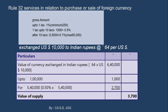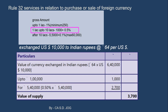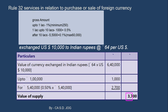Applying the slabs to Rs. 6,40,000: up to Rs. 1 lakh at 1% = Rs. 1,000 (minimum Rs. 250, so Rs. 1,000 applies). From Rs. 1 lakh to Rs. 10 lakh at 0.5% — for the remaining Rs. 5,40,000, 0.5% = Rs. 2,700. Total value of supply under Option B: Rs. 1,000 + Rs. 2,700 = Rs. 3,700.